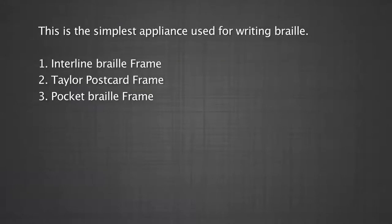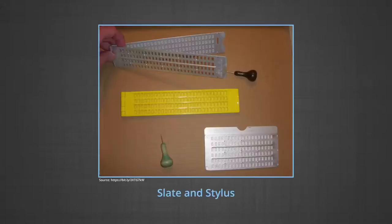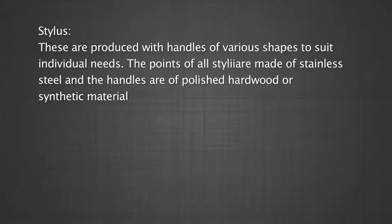Braille Slate: A wooden board with holes on either side; a metal guide is fitted with these holes and brought down as writing progresses. Each cell in the guide has six notches representing six dots in Braille. There is a clamp with pins to hold the paper in position. This is the simplest appliance used for writing Braille — forms include interline Braille frame, tailor postcard frame, and pocket Braille frame. Styluses are produced with handles of various shapes to suit individual needs; the points are made of stainless steel and handles of polished hardwood or synthetic material.